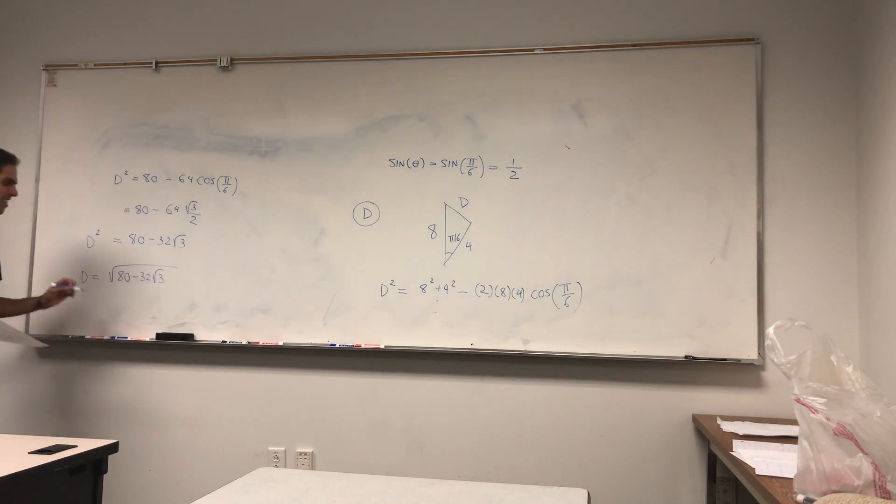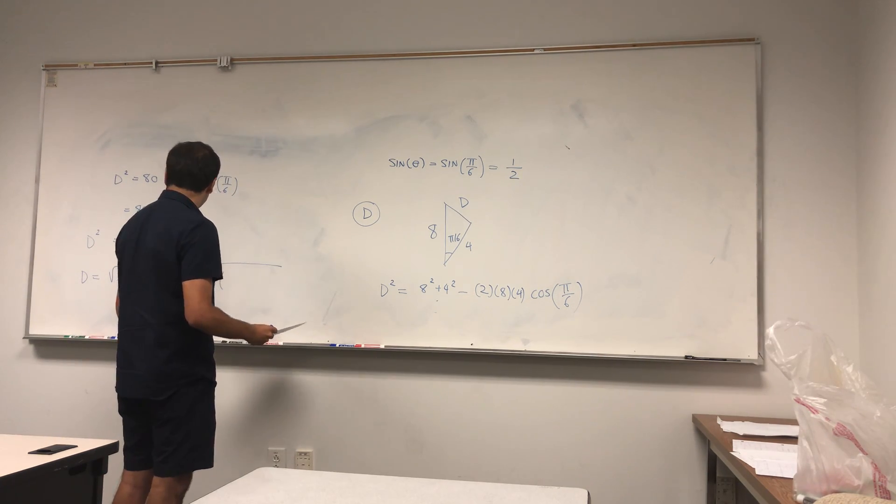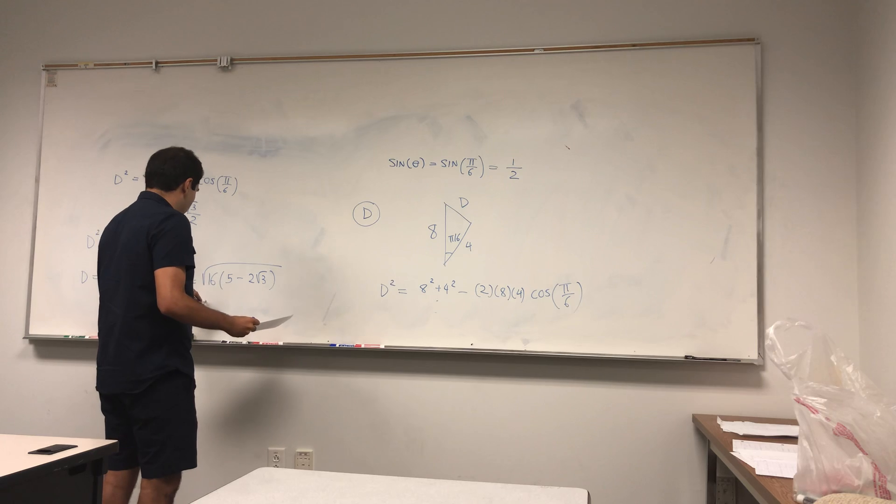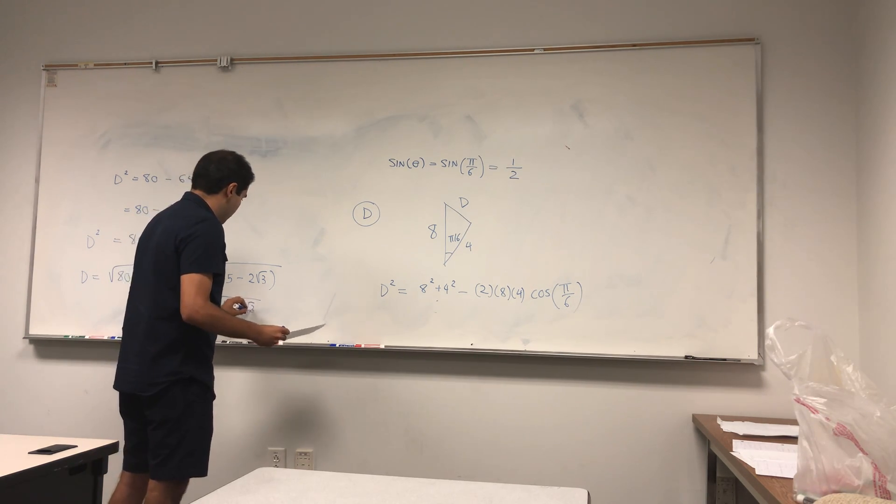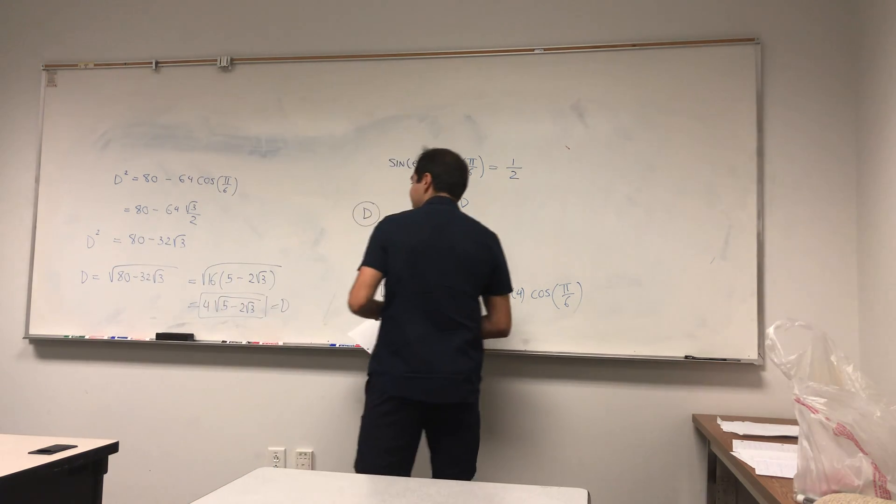You can leave it that way. There's a nicer simplification because actually 16 factors out, so it's 16 times 5 minus 2 square root of 3, and that just becomes 4 times square root of 5 minus 2 square root of 3. Great, and that was our distance D.